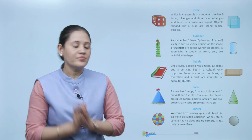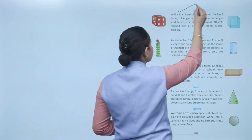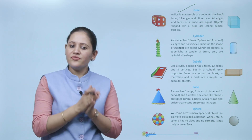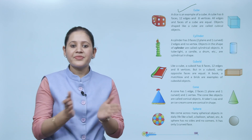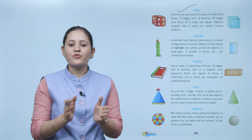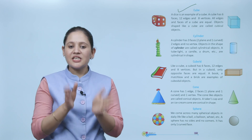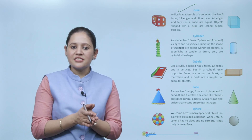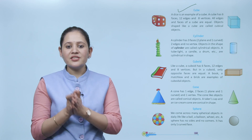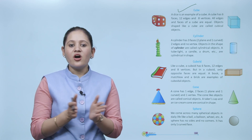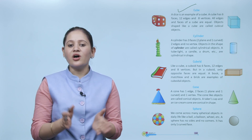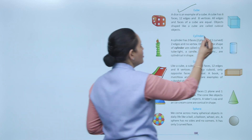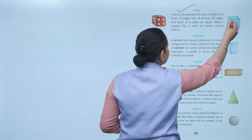Next: cube. Have you ever seen a dice? It is of cube shape — a dice is an example of a cube. A cube has six faces, twelve edges, and eight vertices. All edges and faces of a cube are equal. Objects shaped like a cube are called cubical objects.